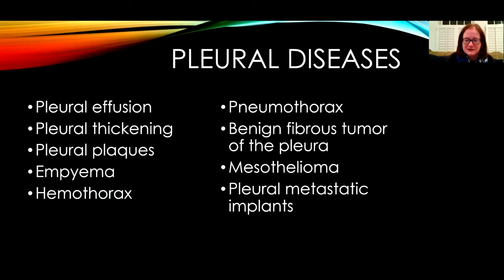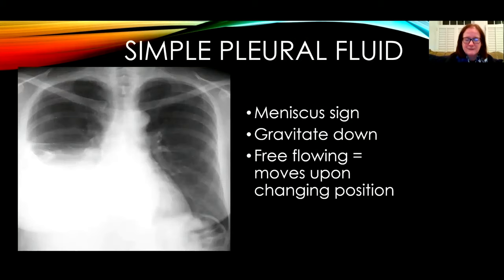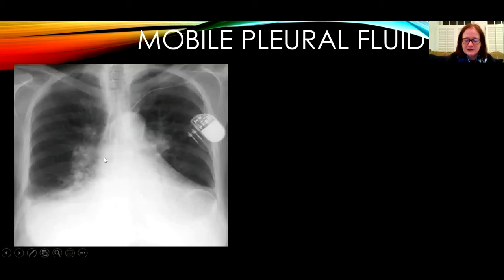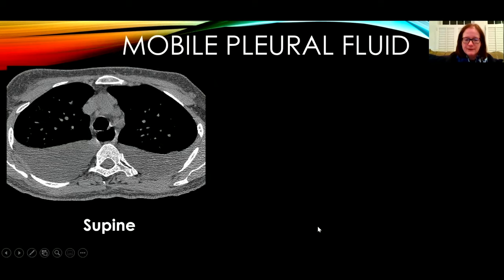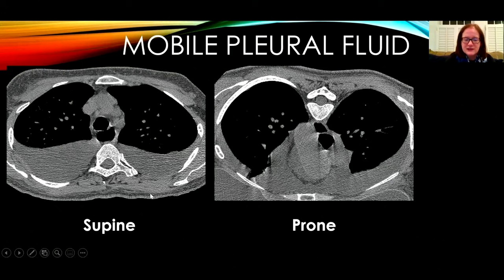We're going to look at the following pleural diseases on chest radiography. Simple pleural effusions tend to gravitate downwards, have a meniscus sign at the edge of the chest wall, and are freely mobile in different positions. This is a patient with a small right pleural effusion — on the decubitus position with the right side down, the fluid layers, indicating that it's mobile. Another patient on CT shows freely flowing pleural fluid making a meniscus sign and gravitating to a dependent location.